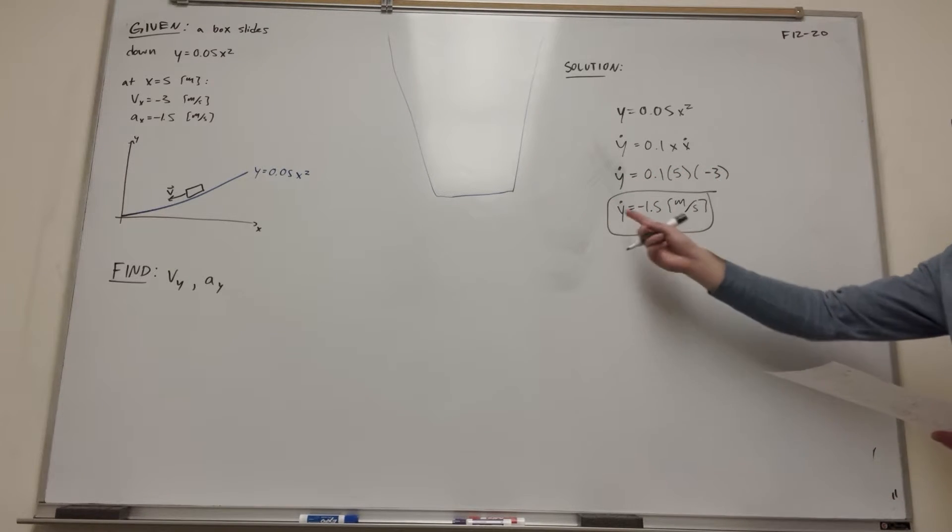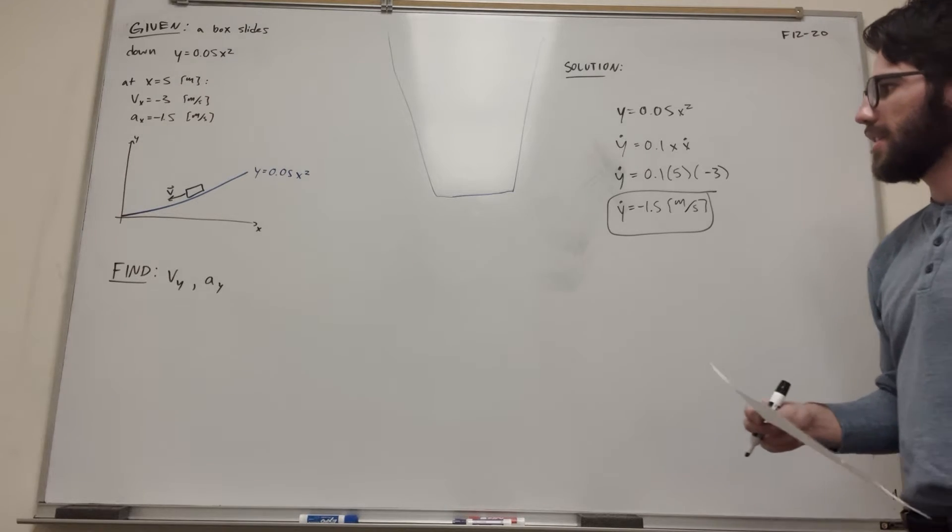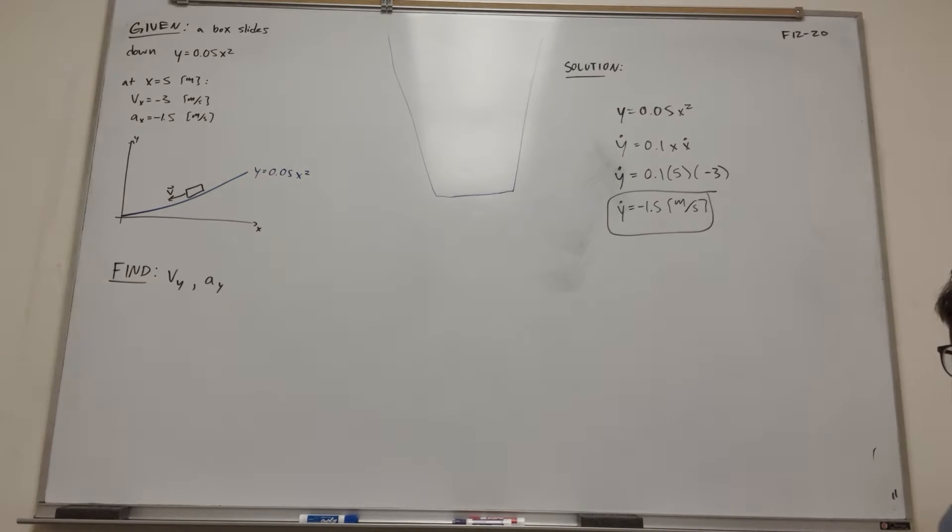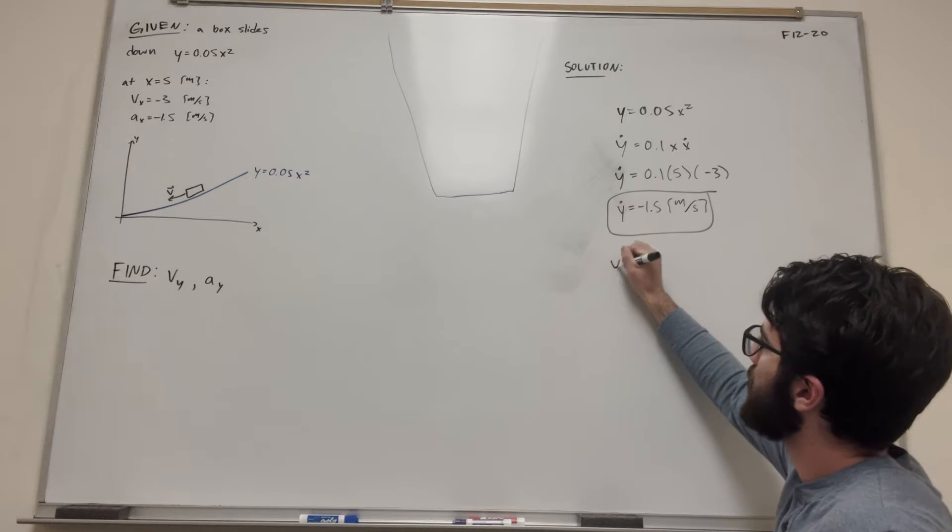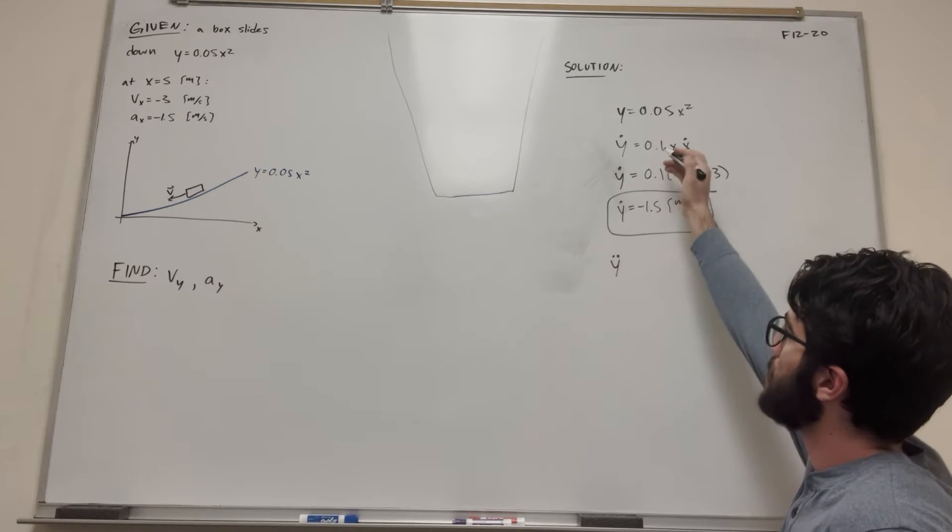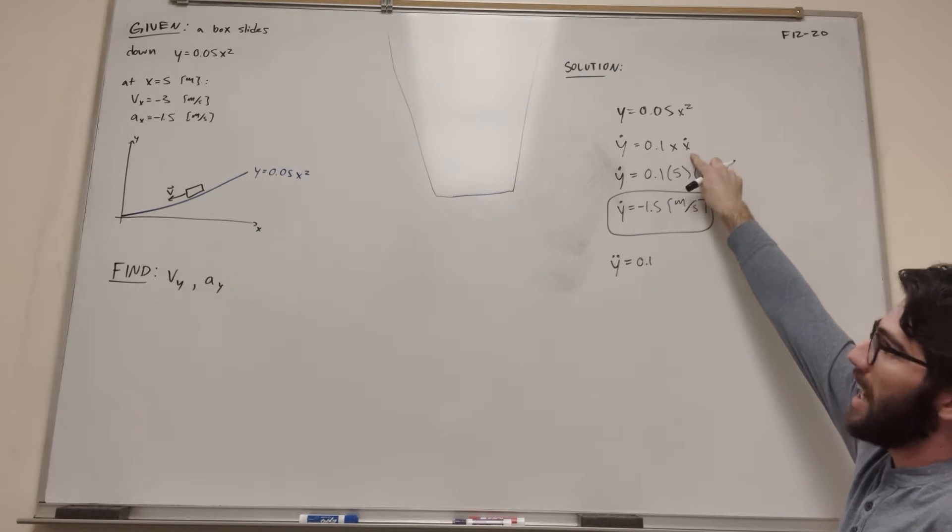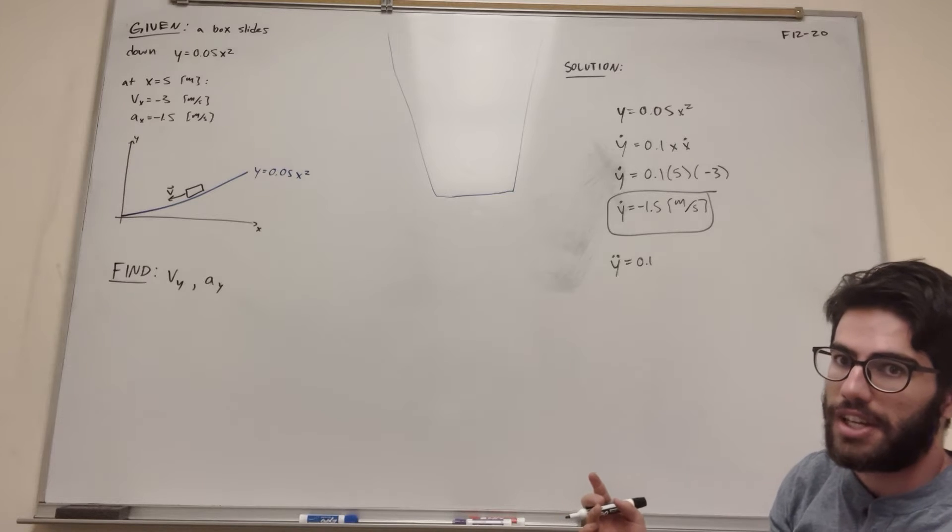That's velocity in the y direction. So now let's find out the acceleration in the y direction. That's going to become y double dot. So now we just need to take another derivative of this. So y double dot, then it becomes 0.1. Well, now we have an x and an x dot, so we're going to need to use product rule for this.